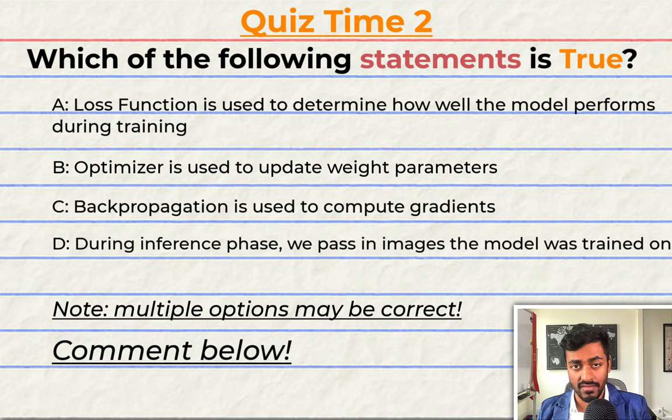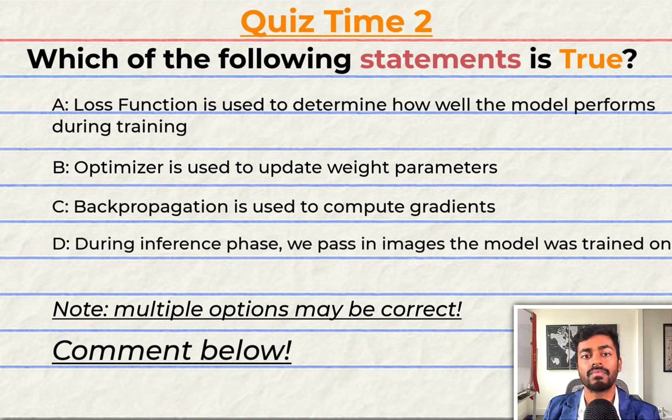A. The loss function is used to determine how well the model performs during training. B. The optimizer is used to update weight parameters. C. Backpropagation is used to compute the gradients. Or D. During the inference phase we typically pass in images that the model was trained on. Note that for this question multiple options can be correct. So comment your answer down below and let's have a discussion.